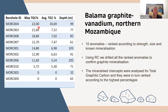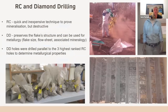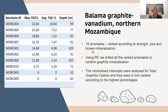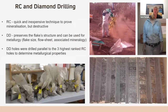We ranked the 10 known anomalies and did some RC drilling just to confirm that these anomalies were graphite-bearing. When we tested them, eight of the 10 anomalies were graphitic. Interestingly, even though anomaly 001 was expected from a geophysical standpoint to be the most significant, the best one we found was MOIC4.